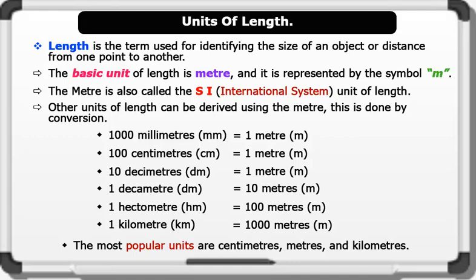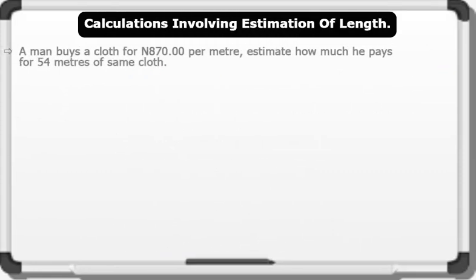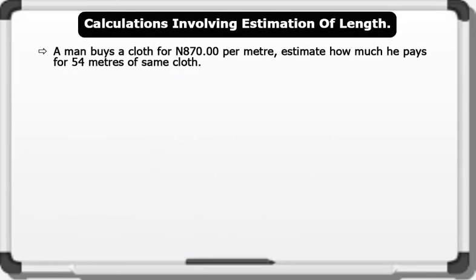That's good! Now let's see some calculations involving estimation of length. A man buys a cloth for 870 naira per meter. Estimate how much he pays for 54 meters of same cloth.